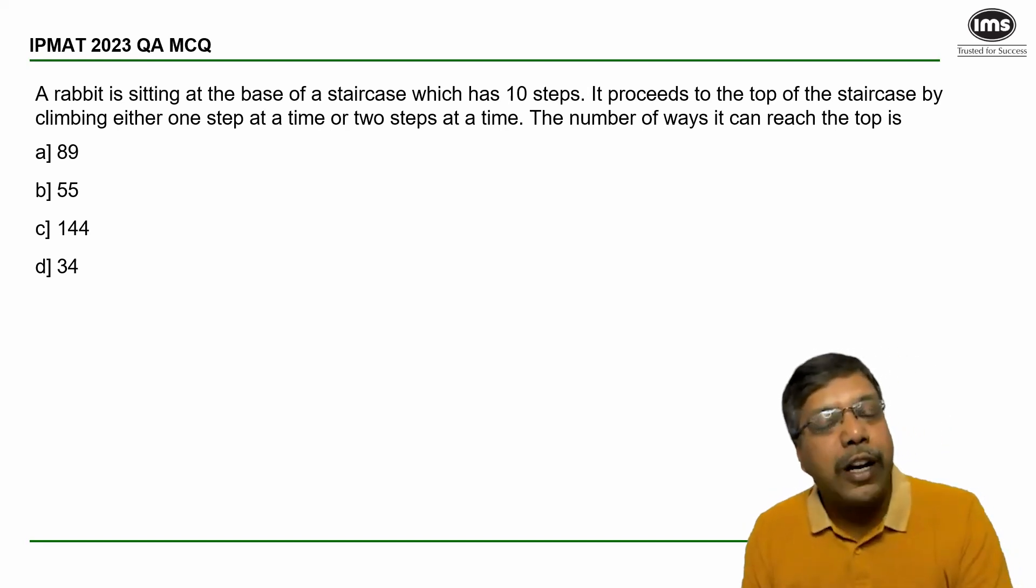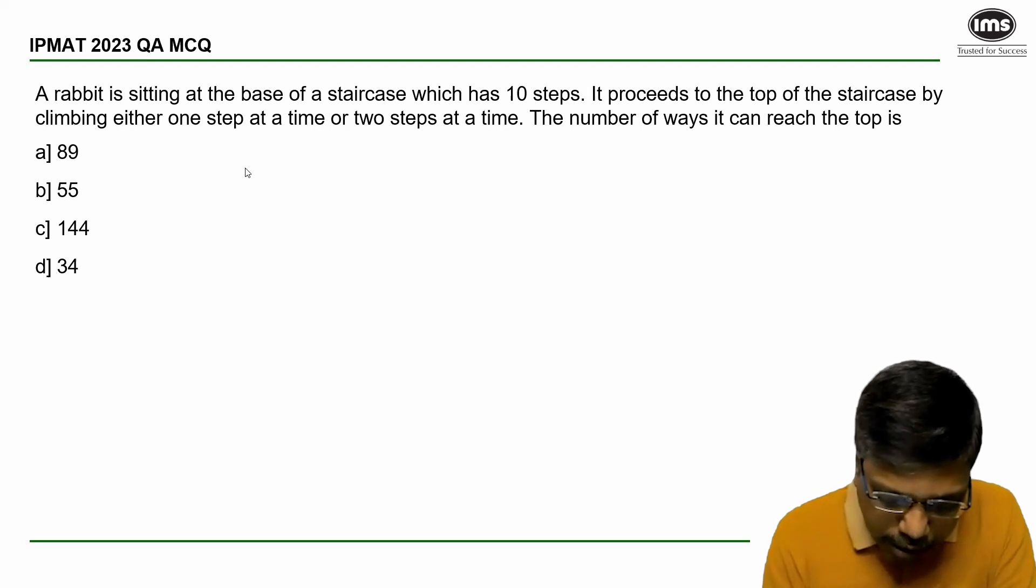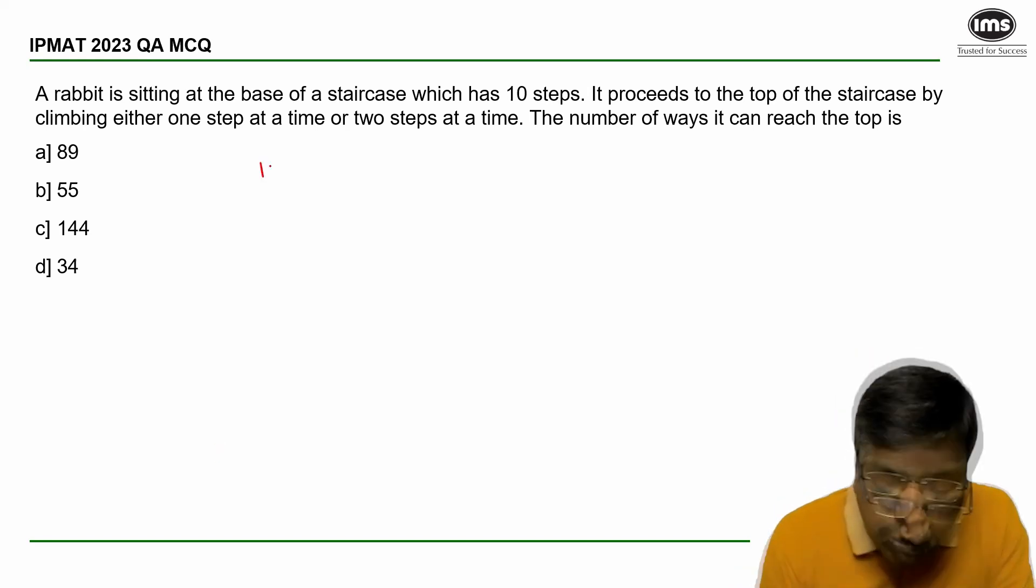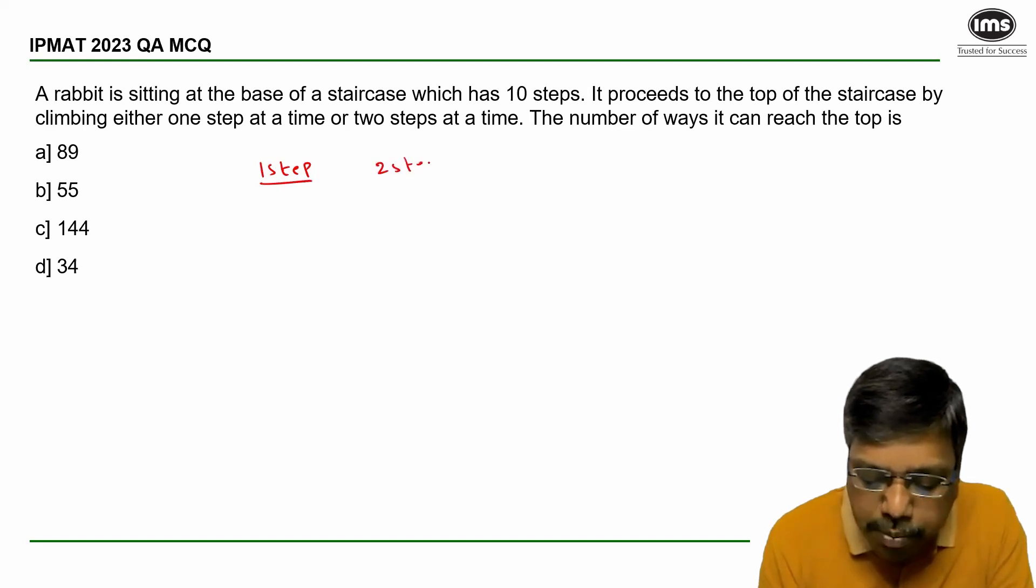So let us see what are the different ways in which it can do that. Number of jumps where it makes only a single step - so one step jumps and two step jumps.